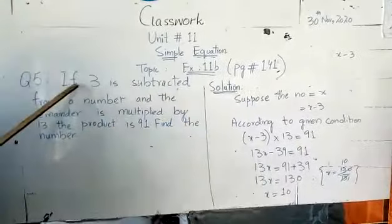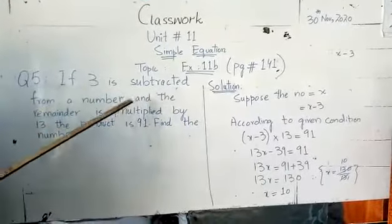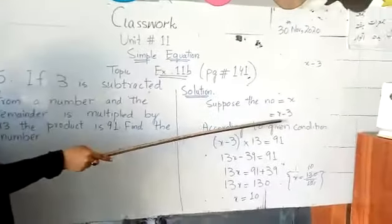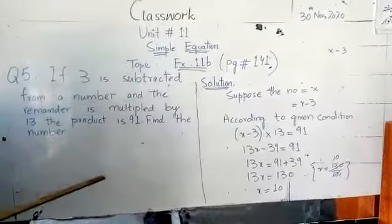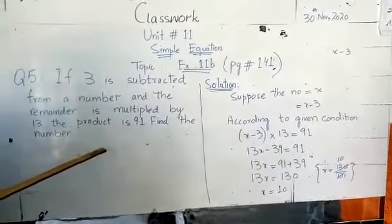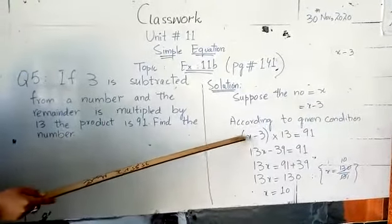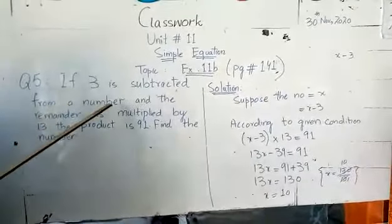The question is if 3 is subtracted from a number. So we suppose the number as x. We have to minus 3 according to the given condition. This is the condition we have. This is why we choose x minus 3.